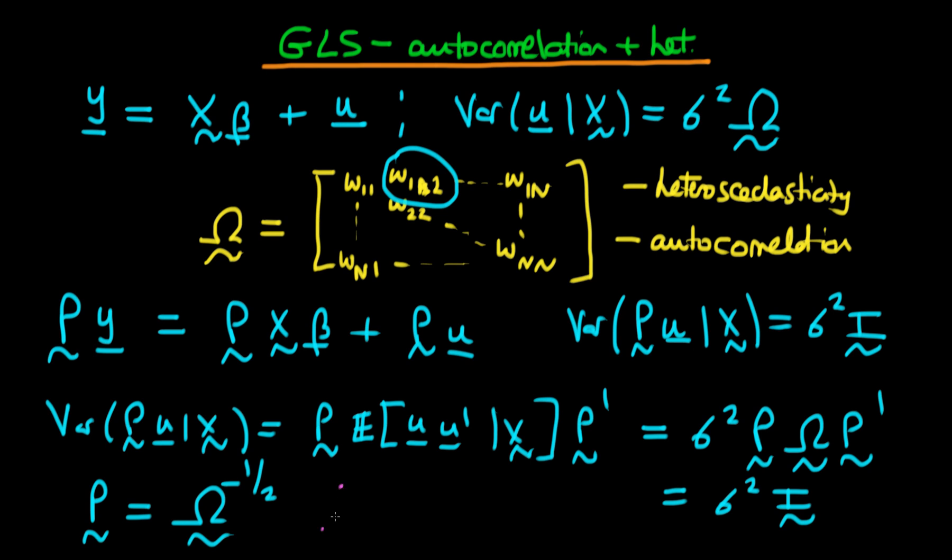But the important message to take away from here is that GLS in the presence of autocorrelation and heteroscedasticity uses the same form as that which we found in solely the presence of heteroscedasticity. So there's no extra learning required here. We can use exactly the same transformation as we used before.